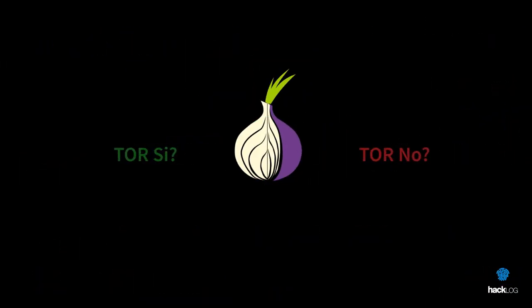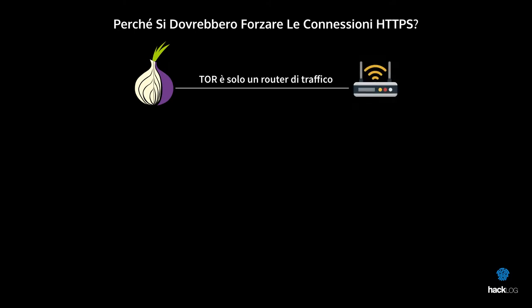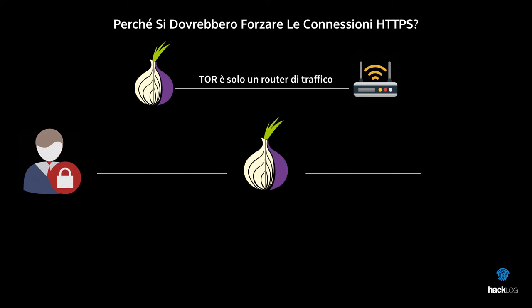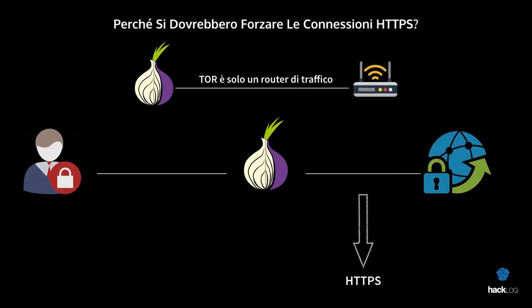As already mentioned, TOR Browser is provided by default with HTTPS Everywhere, an extension for Firefox that forces HTTPS connections — HTTP plus SSL or TLS protocol — to websites. Why force HTTPS connections? Because TOR is only a traffic router and not a tool to encrypt data across the network. The goal of the TOR network is only to ensure the anonymity of the source of the request, encrypting internal connections, but it does not handle cryptography outside the TOR circuit. That is done by the HTTPS protocol, provided the host site supports it. Otherwise, you may have difficulty navigating the site.